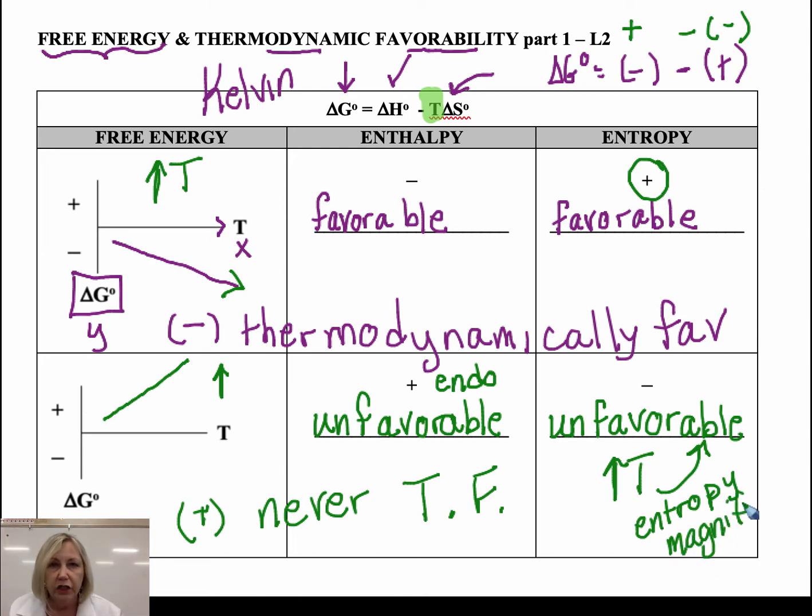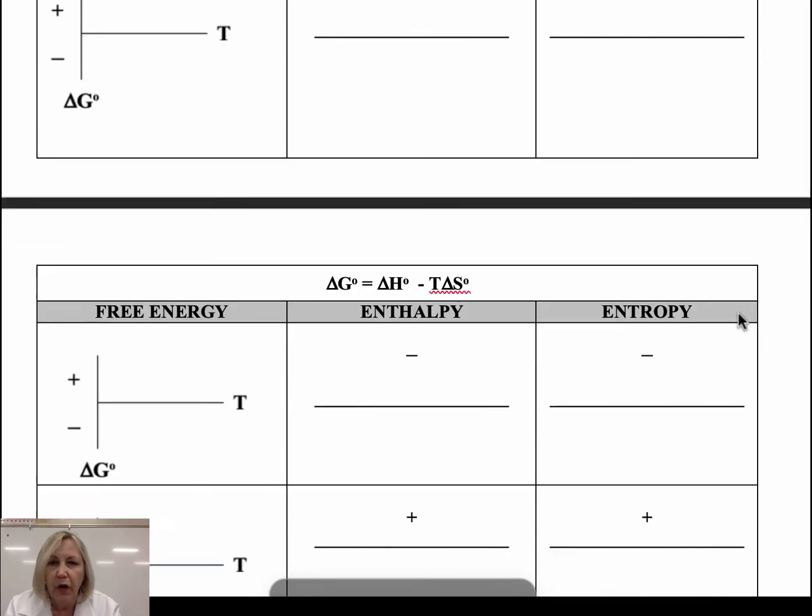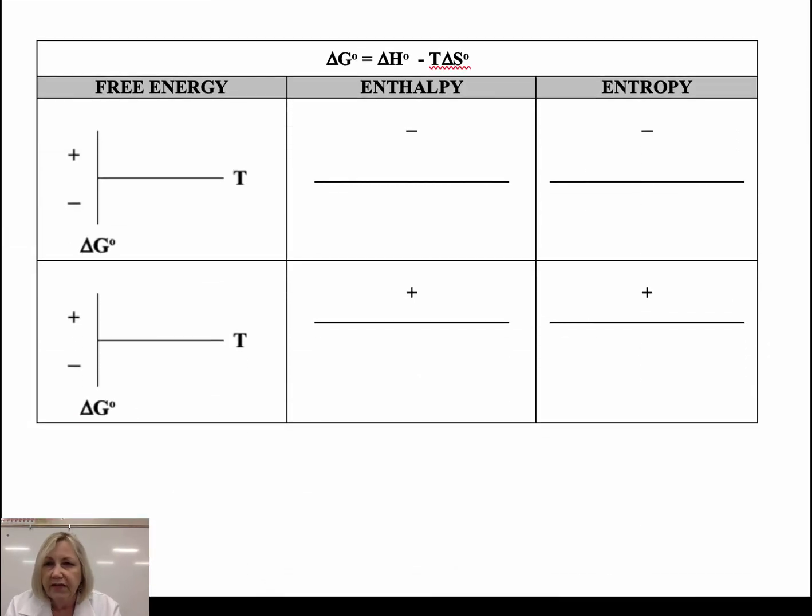Okay, so those are kind of the two extremes. Always, so in this case this was an always thermodynamically favorable. This is a never thermodynamically favorable. But there are two other possibilities that we want to explore. And that's when one is favorable and the other is unfavorable. And how can we overcome a barrier for a reaction?